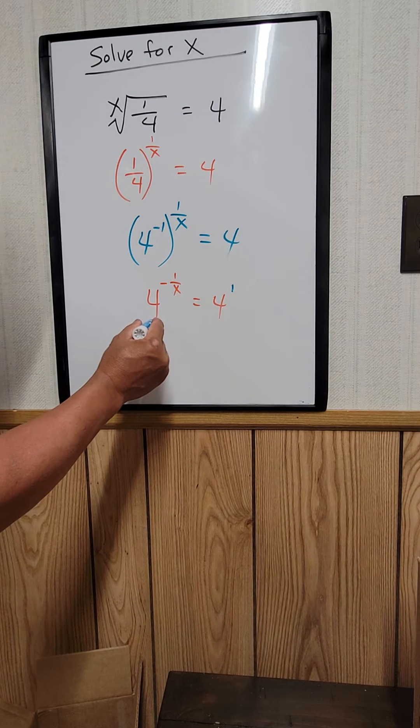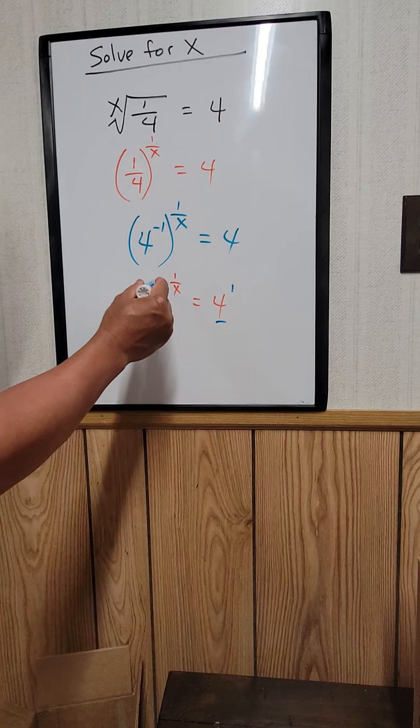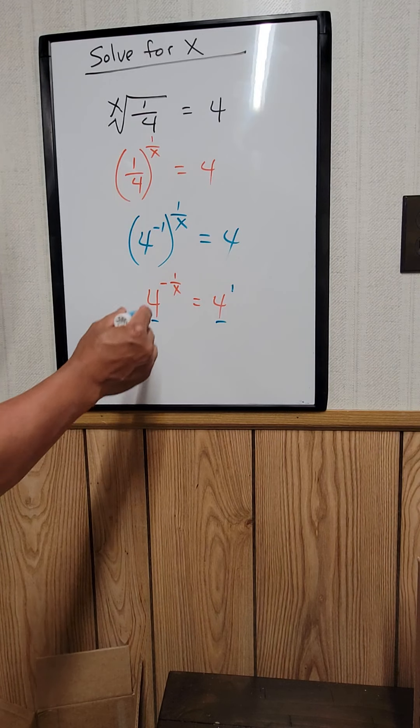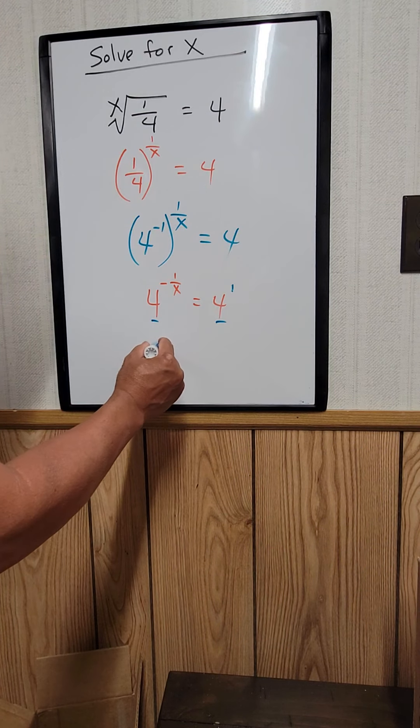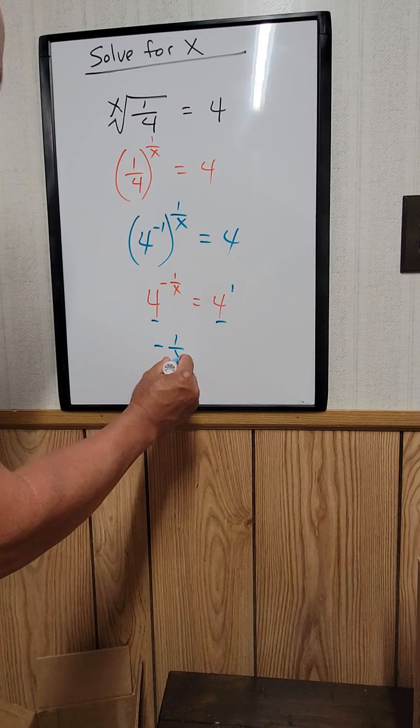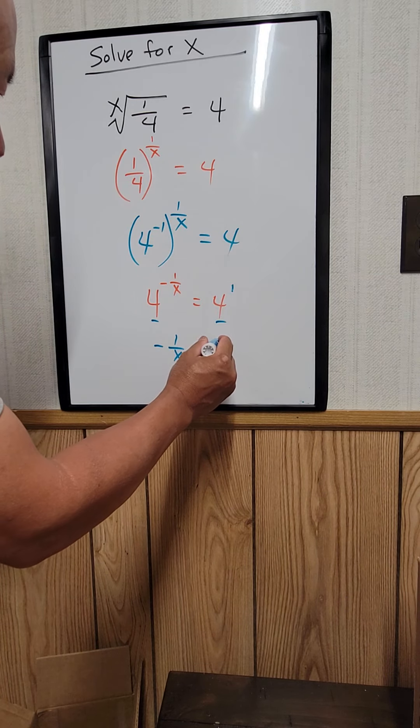And since the base is the same, therefore the exponent has to be the same. So negative 1 over x equals 1.